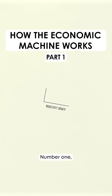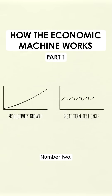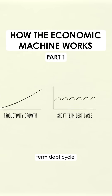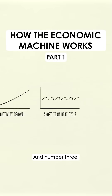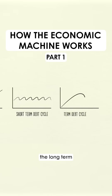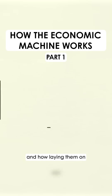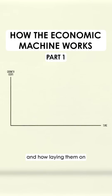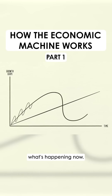Number one, productivity growth. Number two, the short-term debt cycle. And number three, the long-term debt cycle. We'll look at these three forces and how laying them on top of each other creates a good template for tracking economic movements and figuring out what's happening now.